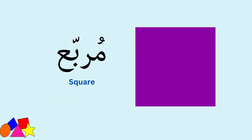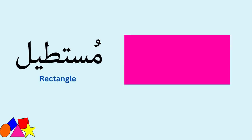Morabah (مربع) — Square. Mustatil (مستطيل) — Rectangle.